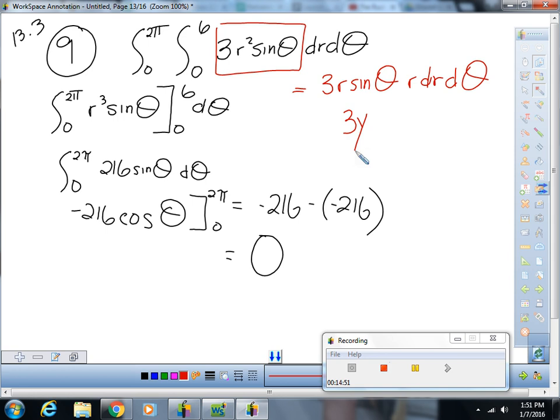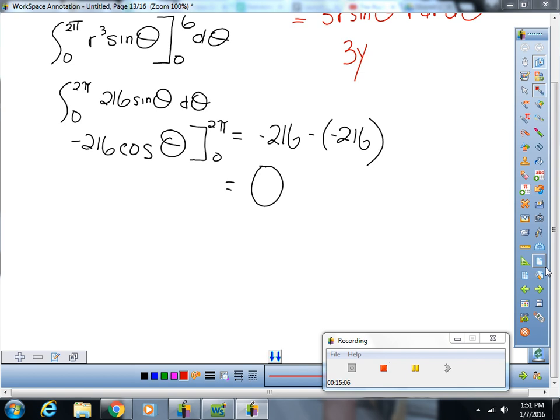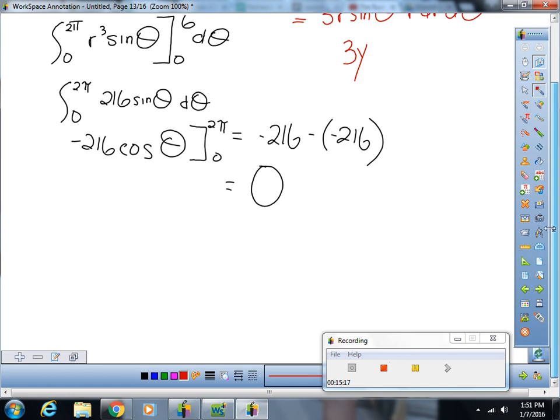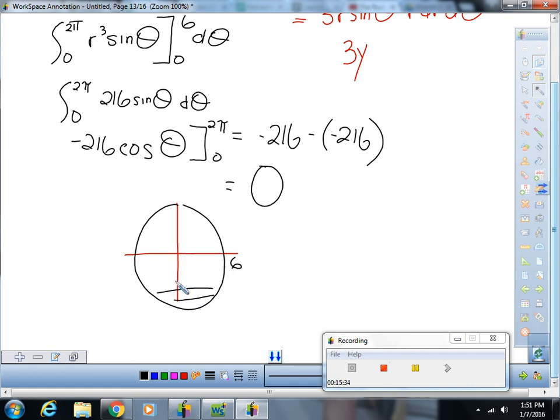Okay, we know that r goes from zero to 6 and that theta goes from zero to 2π. So what is our region? What's it look like? Yeah, we know that r goes from zero to 6 and that theta goes from zero to 2π, so what's our region? What's it look like? It's a circle, right? Radius 6. Right.